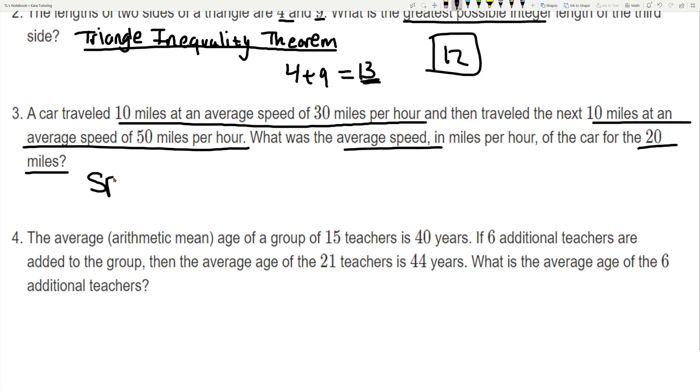So speed is defined as distance over time, so in order to find an average speed for 20 miles we already know the distance so that's just going to be 20 miles and now we gotta calculate the time. So if we're traveling at 30 miles per hour, what fraction of an hour is it going to take for us to travel 10 miles? It's just going to take us one third of an hour. And if we travel at 50 miles per hour, how much of an hour is it going to take for us to travel 10 miles? It's just going to take us one fifth of an hour.